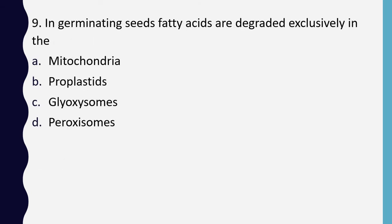Question 9. In germinating seeds, fatty acids are degraded exclusively in: mitochondria, proplastids, glyoxysomes, or peroxisomes. The correct answer is option C: glyoxysomes.